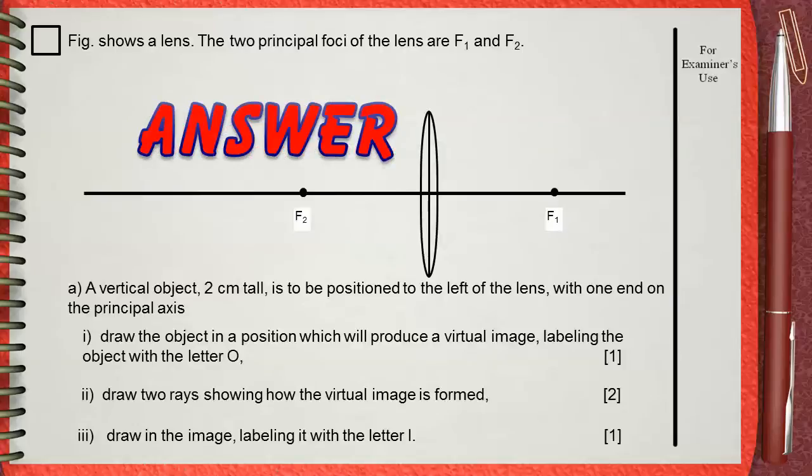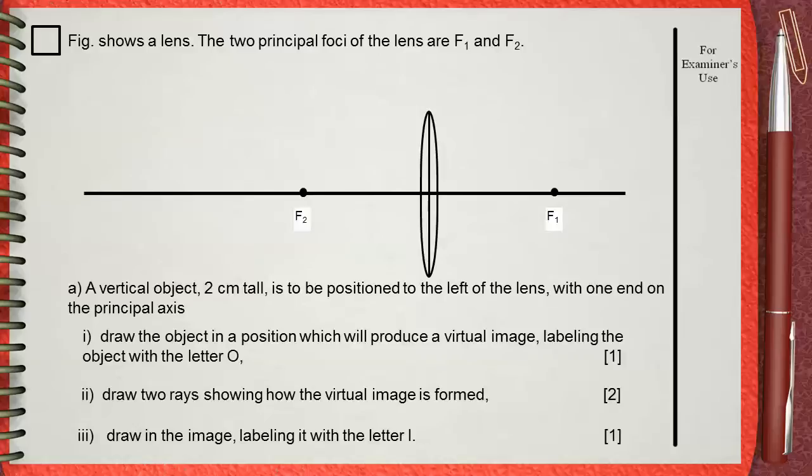This question is a little harder than the previous one. In this case, even the object is not drawn. You need to draw it. But let's have a look at this expression. He says that your case will produce a virtual image. The only case that will produce a virtual image is if the object is between the lens and the focus.